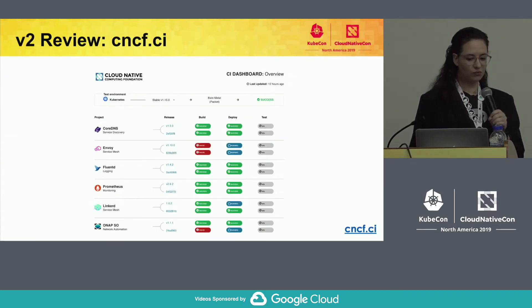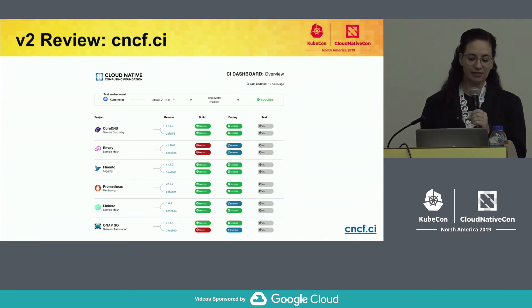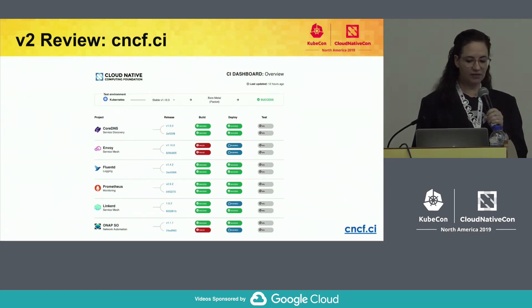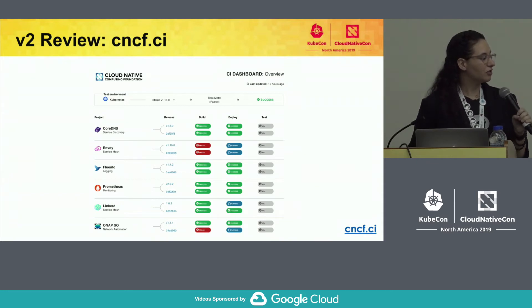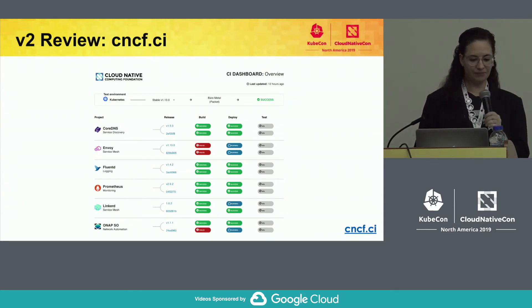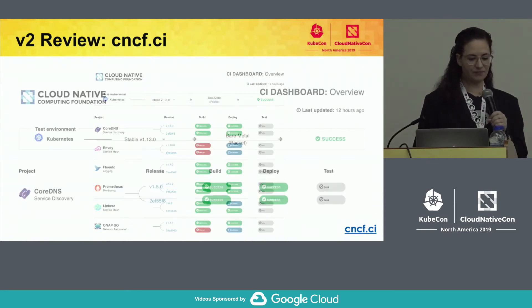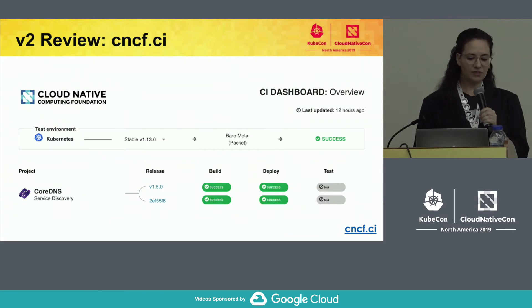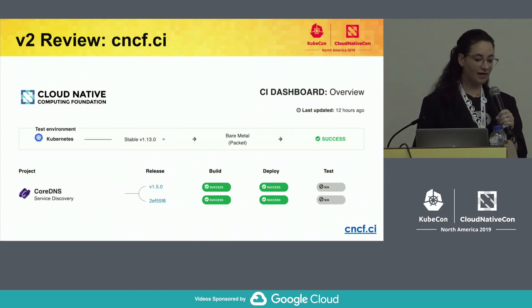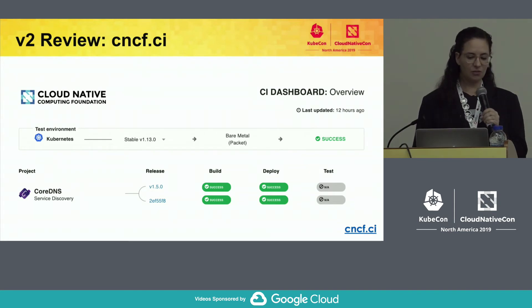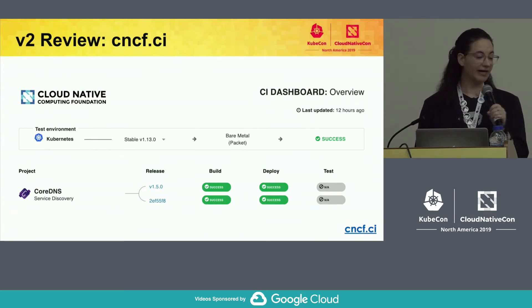V2 was released in February 2019 with an updated user interface, and the primary focus was to put the projects in front and center. We reduced the number of columns from 11 wide to five. We added a test environment section to support multiple configurations running on the bare-metal packet servers.